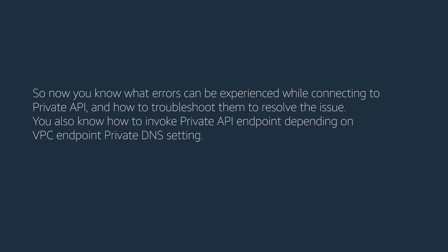So now you know what errors can be experienced while connecting to the private API and how to troubleshoot them to resolve the issue. You also know how to invoke a private API endpoint depending on VPC endpoint private DNS settings. Thanks for watching and happy cloud computing from all of us here at AWS.